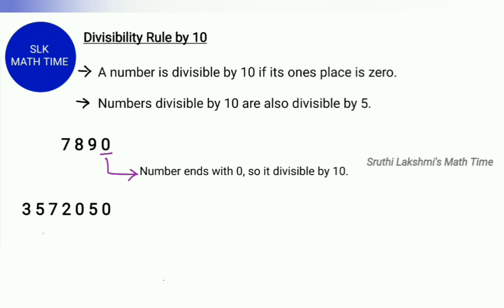Let's see another example: 3,572,050. Here, the number ends with a 0, so that means this number is divisible by 10.